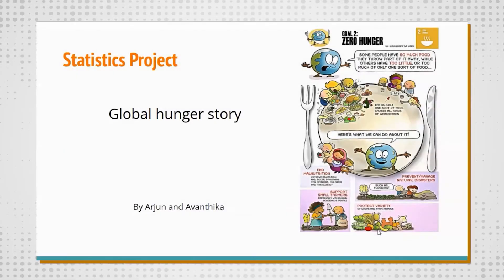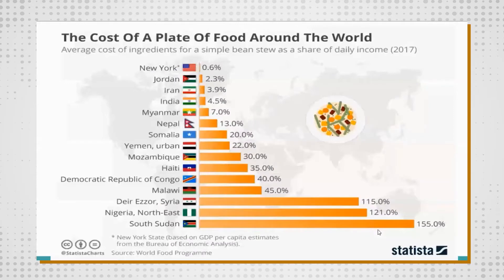Let's begin with the first graph, which talks about the cost of a plate in different countries. A plate of bean stew costs very less in New York, while the same dish costs a fortune in South Sudan. This shows us the huge difference in the production costs in various countries.